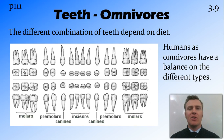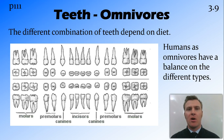The different combination of teeth depends on the diet of the animal — what the animal eats. Humans are omnivores; we eat both meat and plants, so therefore we have a balance of the four different types of teeth.